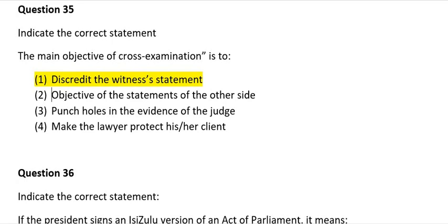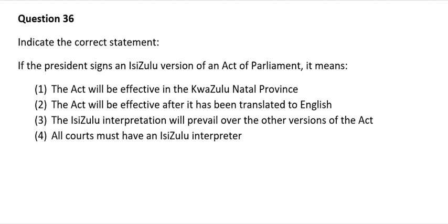Question 36: Indicate the correct statement. If the President signs an essential version of an Act of Parliament, it means: 1) The act will be effective in the positive natal province; 2) The act will be effective after it has been translated to English; 3) The essential interpretation will prevail over the other version of the act; 4) All courts must have an essential interpreter. The correct answer is number 3: the essential interpretation will prevail over the other version of the act.